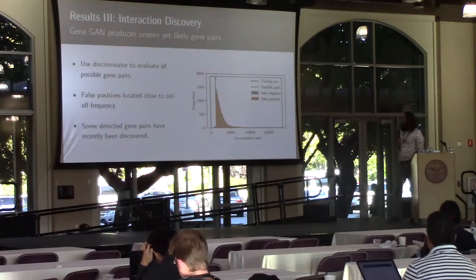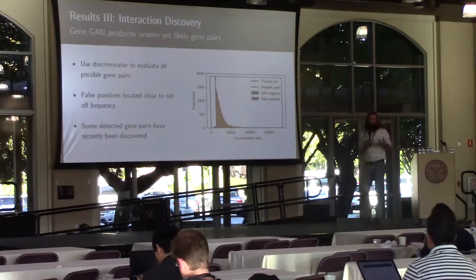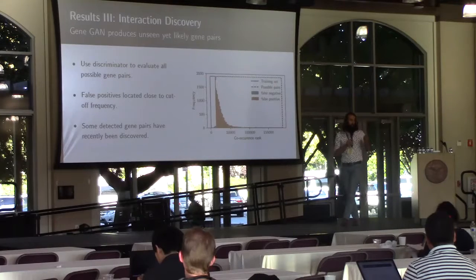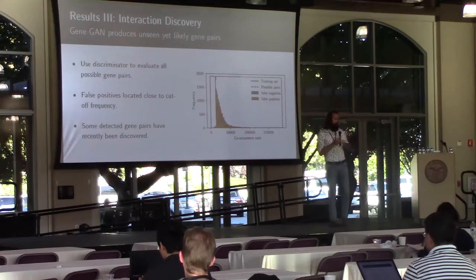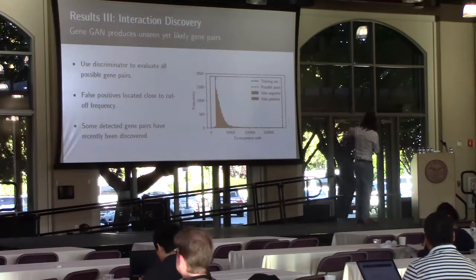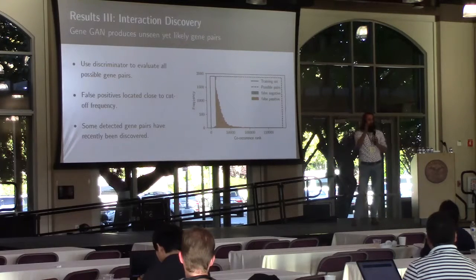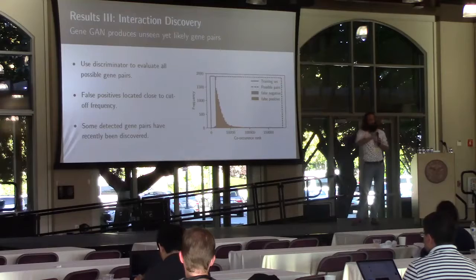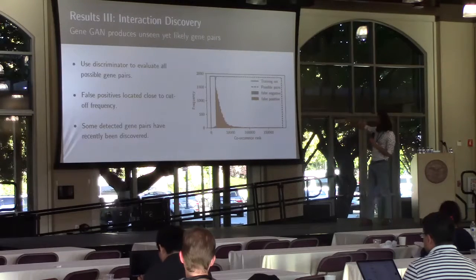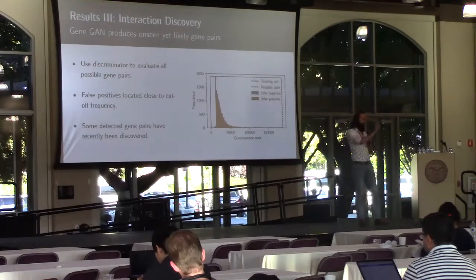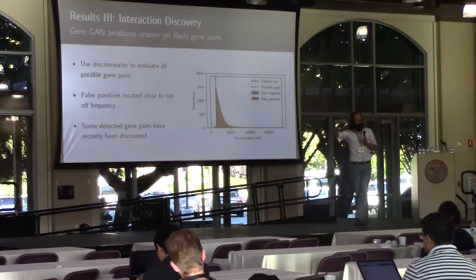The final and most interesting problem was interaction discovery — true generation of mutations. What we tried to do was hypothesis generation for biomedical researchers: can we give them promising mutation patterns they haven't seen in real life but may want to look for in genome screening panels? To get training data for our GAN, we kept only mutation patterns occurring in at least 100 patients. Interestingly, a lot of the false positives that our generator produces actually fall just to the right side of this frequency cutoff — things the generator never saw in training but predicts correctly because they just fall outside that threshold.